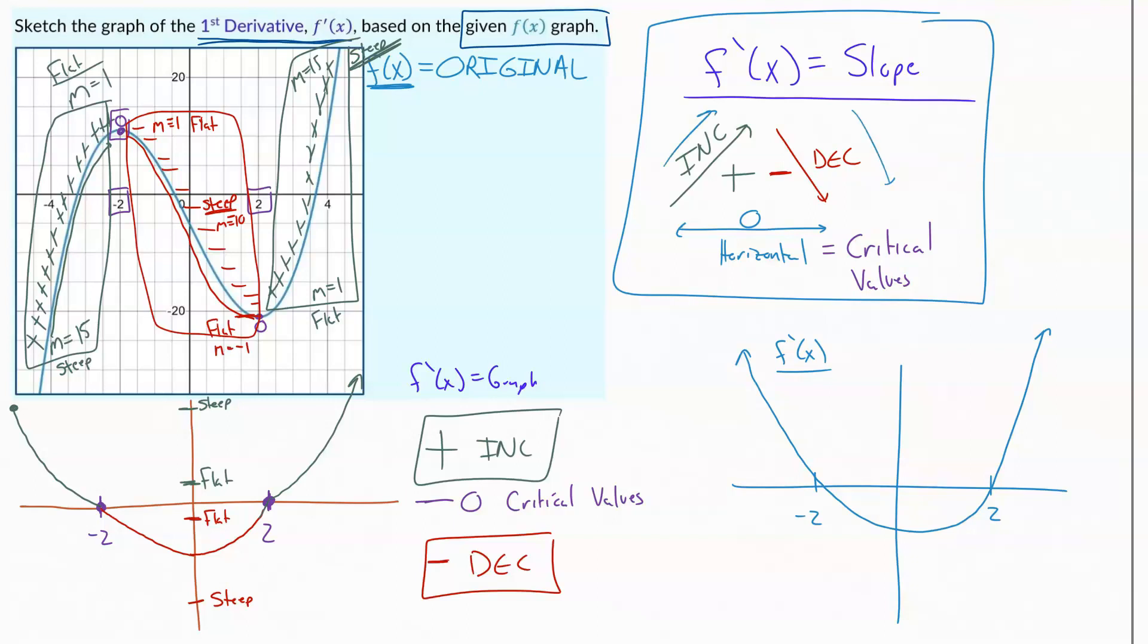Label your graph positive wherever it's going up and increasing, negative wherever it's going down and decreasing, and then zero wherever you get those critical values, wherever it goes horizontal. Those happen at peaks, they happen at valleys, and they also happen when this thing just goes sideways for a second.